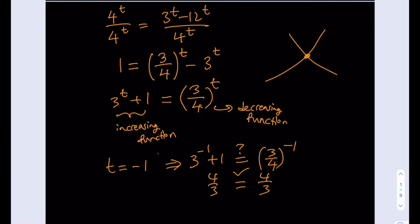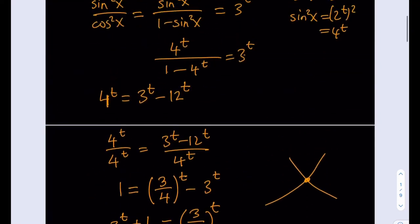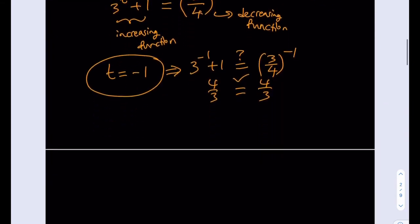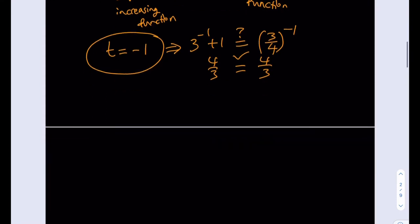So t equals negative 1 is obviously a solution. Let's go ahead and use that. If you go back to our initial assumption that sine x equals 2 to the power of t, we're going to replace sine x with 2 to the power of t. And 2 to the power of t equals 2 to the power of negative 1 because we just found the t value to be negative 1.